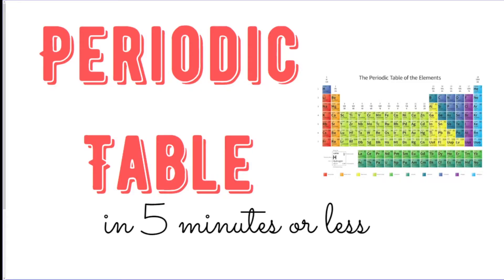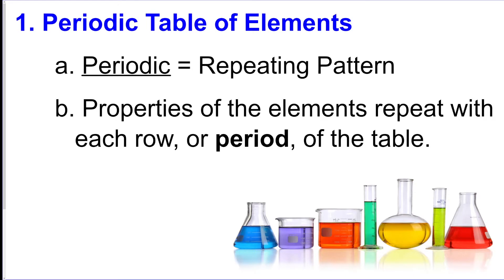Hi everyone, welcome to the next five minutes or less video. This is going to be on the basics of reading the periodic table of elements. The word periodic means repeating pattern, and that just means there's a bunch of different patterns on the periodic table that repeat over and over again, and that's how the elements are categorized.